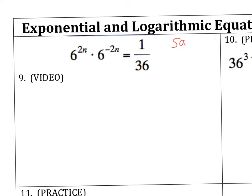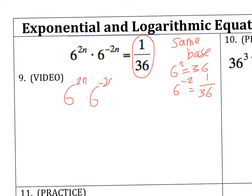The first thing that I want to try to do is make this into the same base. And I do need to convert this. We know that 6 squared is going to be 36. 6 to the negative 2 is going to be 1 over 36. So, I could rewrite this as 6 to the 2n times 6 to the negative 2n is equal to 6 to the negative 2. We've all got the same base now.